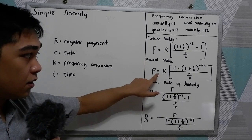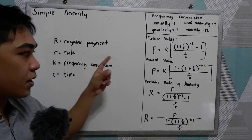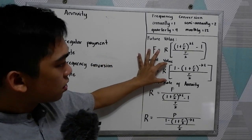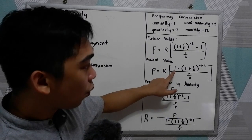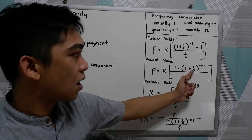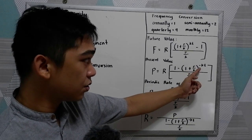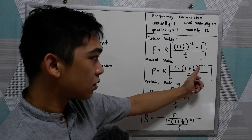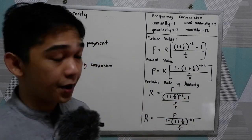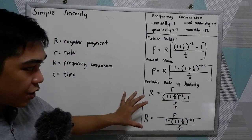And the formula for the present value: we are going to use P is equal to R, the regular payment, open bracket, 1 minus quantity 1 plus R over K, raised to negative KT, all over R over K.